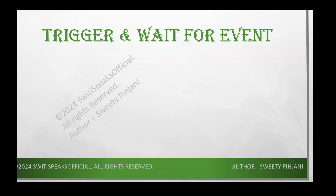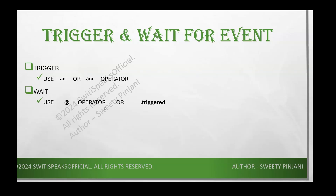To trigger an event you can use one of two operators, and to wait for an event you can use the at-the-rate operator or dot-triggered — these are two ways. There is another construct called wait_order. Wait_order waits for events to occur in a particular order. For example, if I want event A to occur first and then event C, I will say wait_order(A, C), which means wait until event A occurs and then event C occurs.